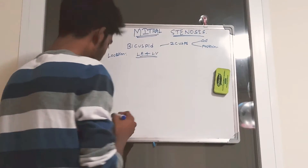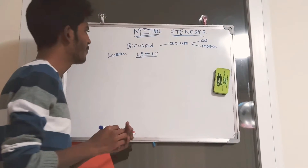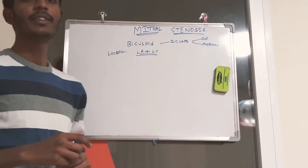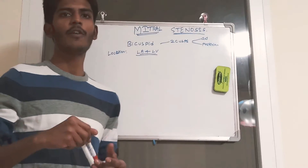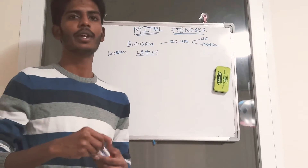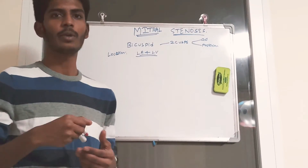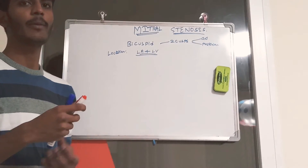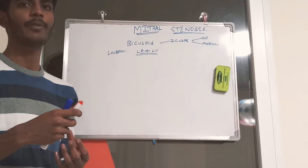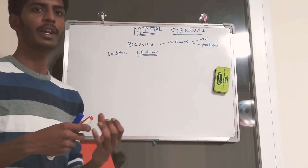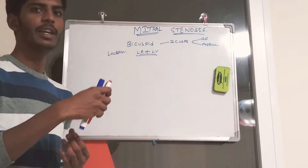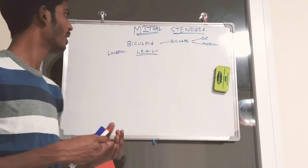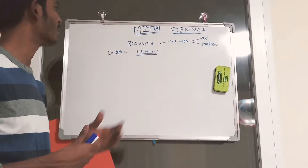What is the importance of the mitral valve? It prevents backflow of blood during systole. When there is a systole, the blood which pumps from the ventricle does not go back to the atria — that is how it prevents backflow.